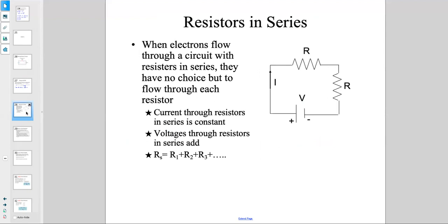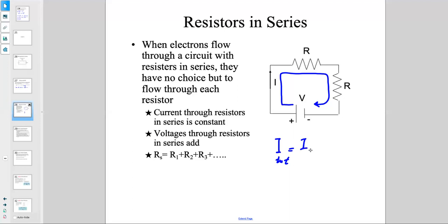Resistors — we have two, in fact three different configurations of resistance in a circuit. The first is resistance in series. When electrons flow through a circuit with resistors in series, they have no choice but to flow through each resistor. The current through each resistor will be constant — the current going through resistor one equals the current through resistor two. So the total current I is the same through all resistors.